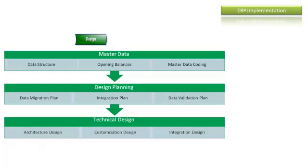We then move to technical design. The architecture design is a very important task, ensuring application high availability and that the application will be reliable for the company. The customization design is a cooperation between the application consultant, technical consultant, and business process owner — they translate customization requirements into screen forms, tables, business logic, and interfaces with the standard application. Integration points — whether internal or external — are identified, along with how they affect the business process flow.